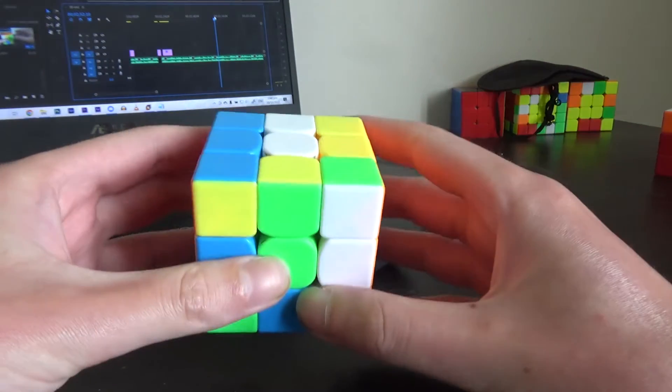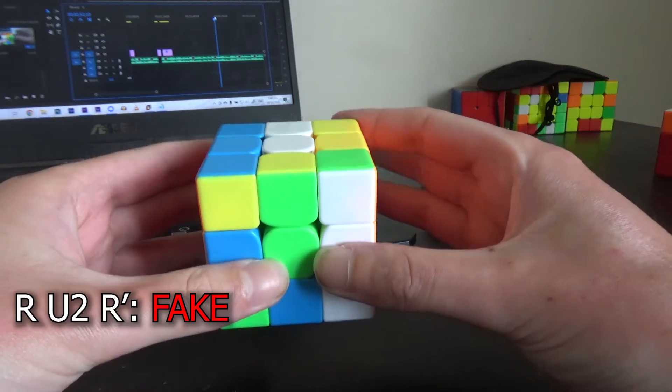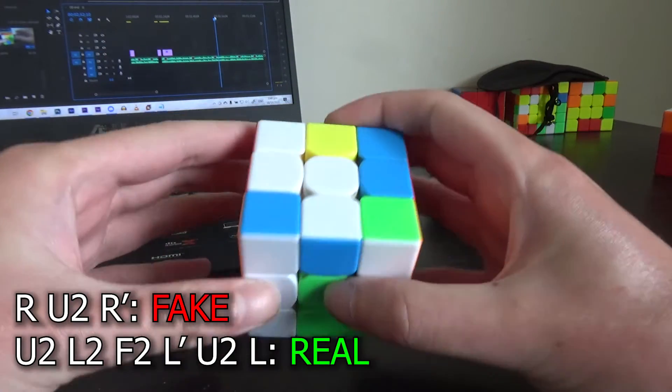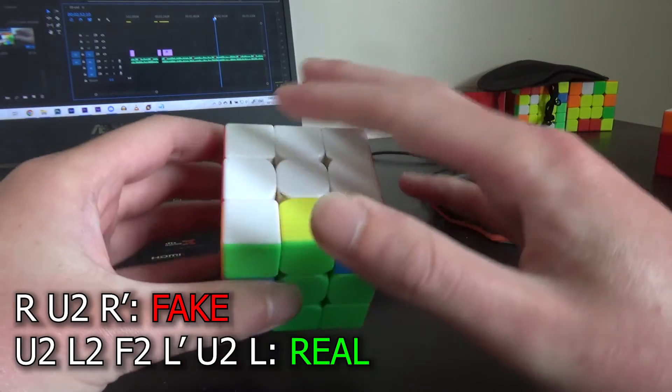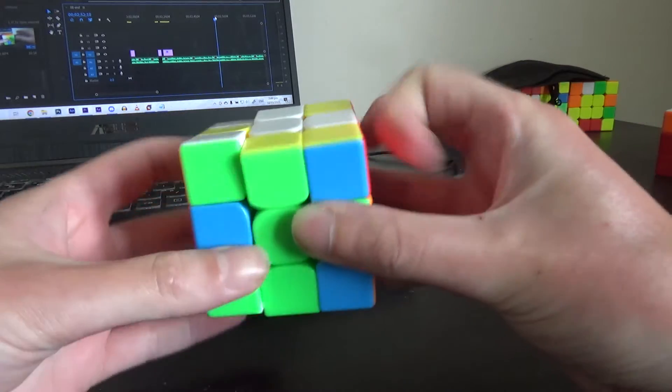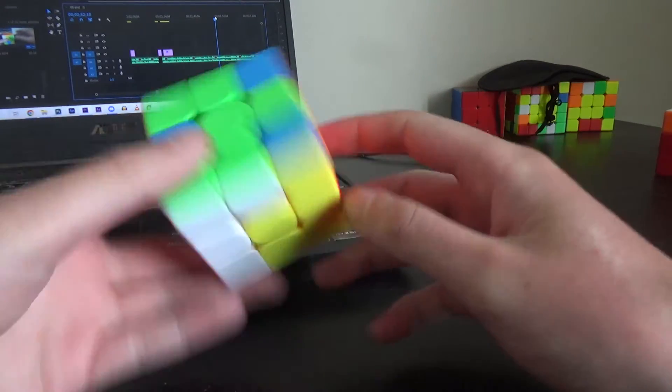Now there's a way to fix this. Instead of doing RU2R', you do U2 L2 F2 L' U2 L, which annoyingly adds three moves but you can often cancel two so you end up only adding one. There's a more sophisticated way of looking at it than that, but you don't really need to worry about it for now.